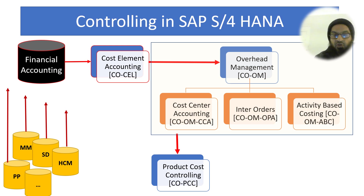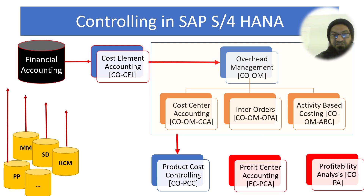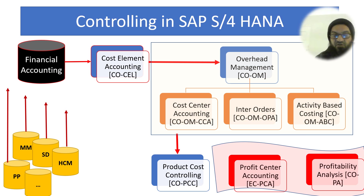From Overhead Management, data flows to the fourth sub-module in Controlling: Product Cost Controlling, where we actually cost the product. The first three sub-modules are relevant for both trading and manufacturing concerns, but Product Cost Controlling is only relevant for manufacturing concerns.